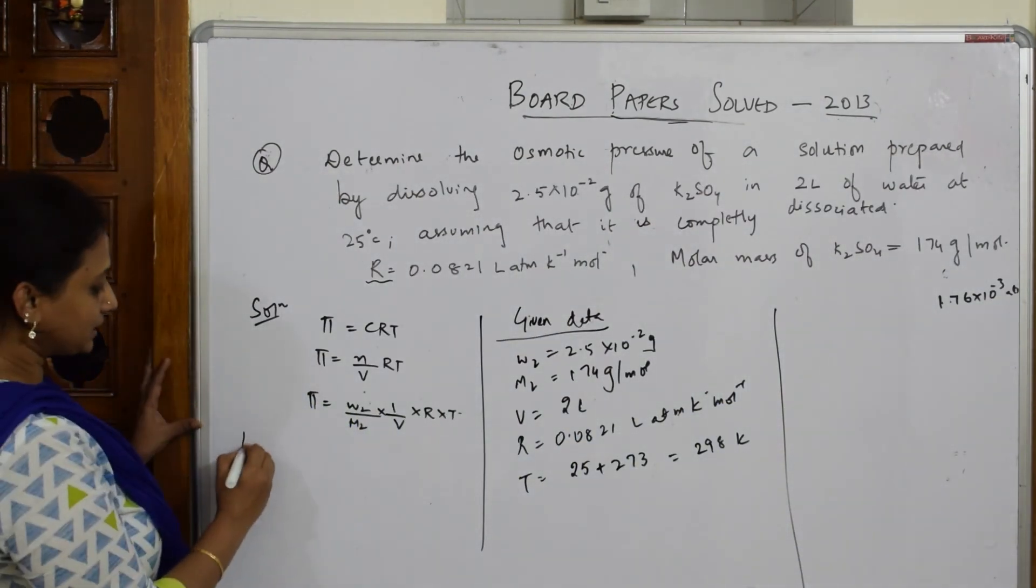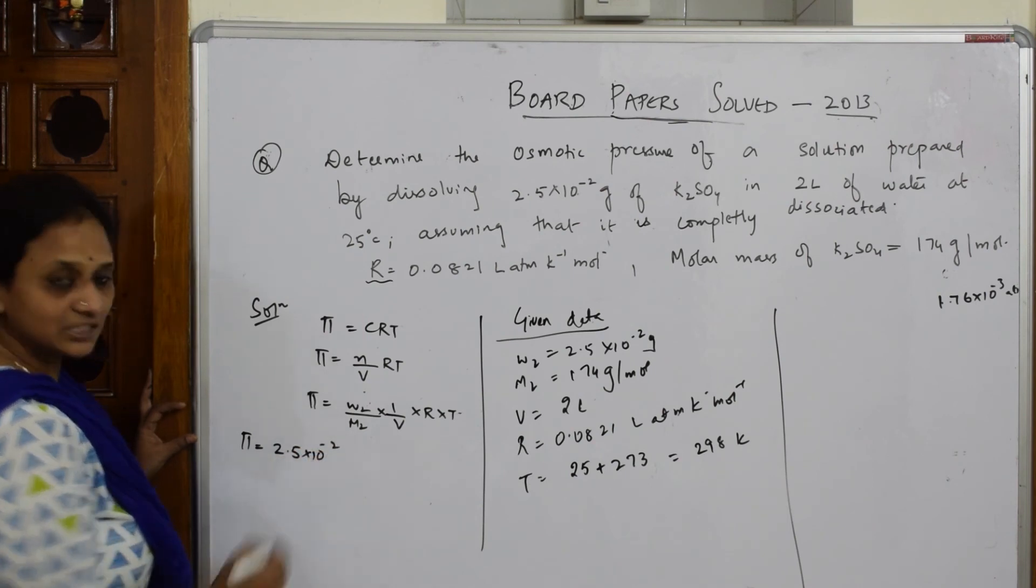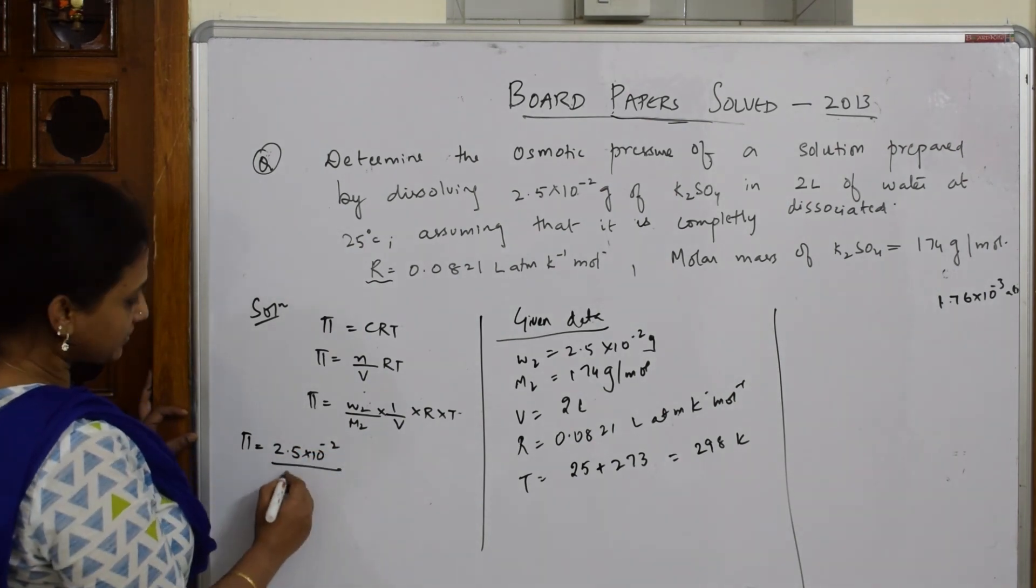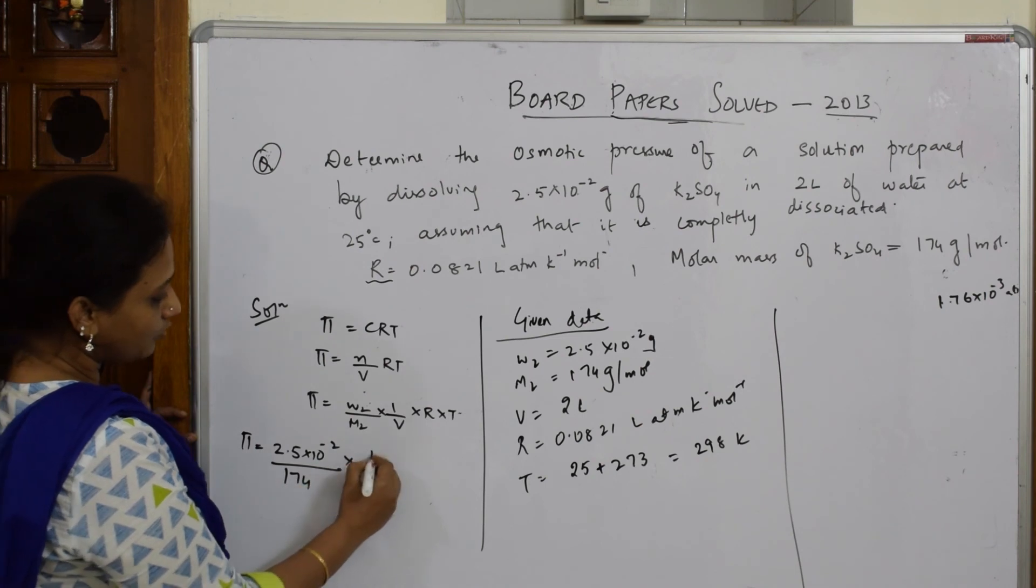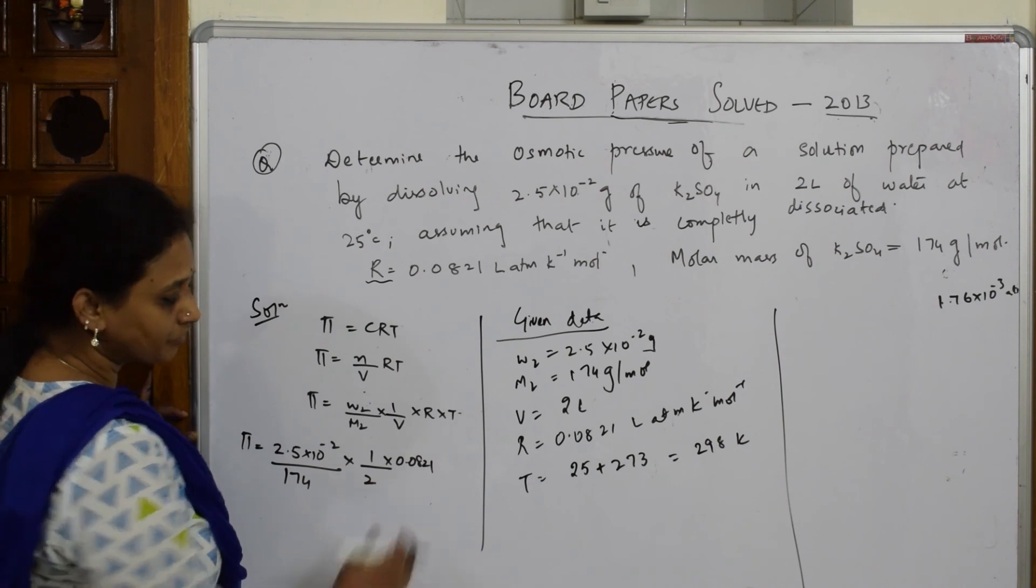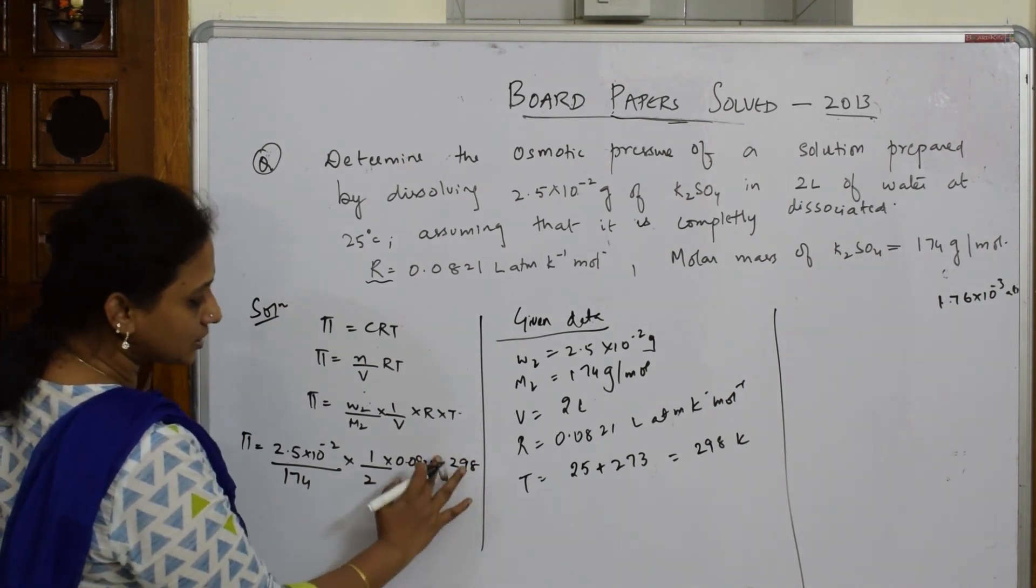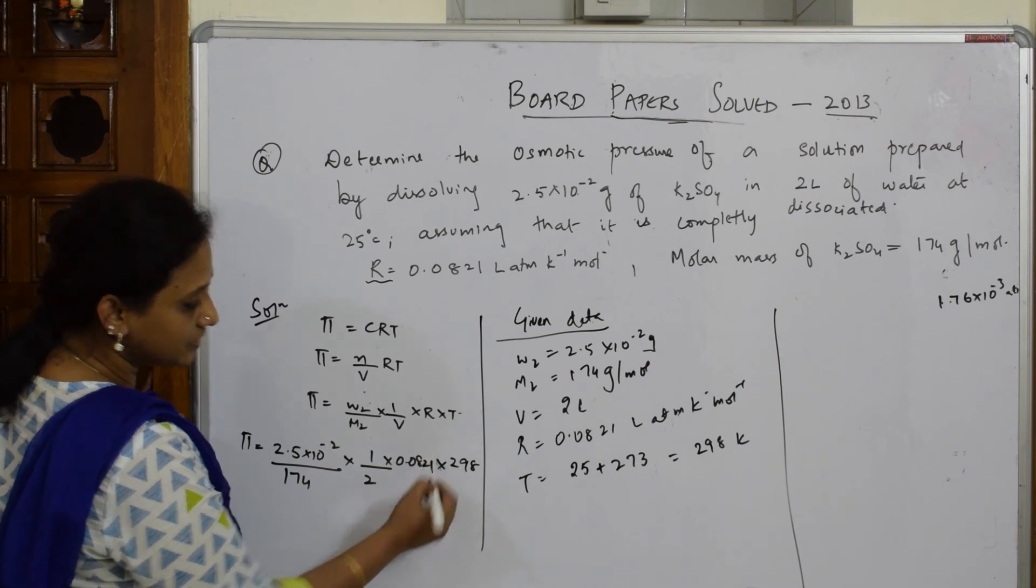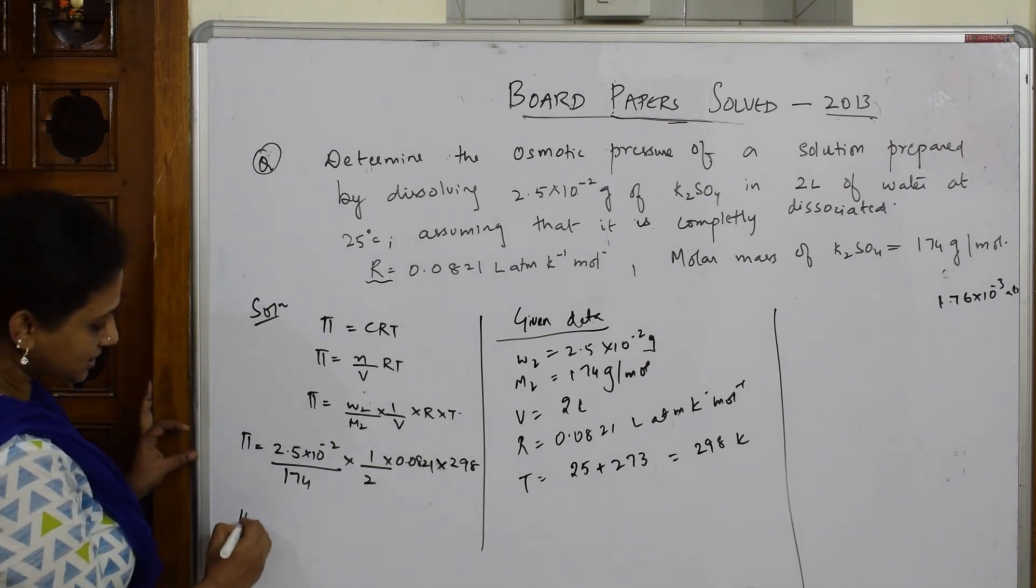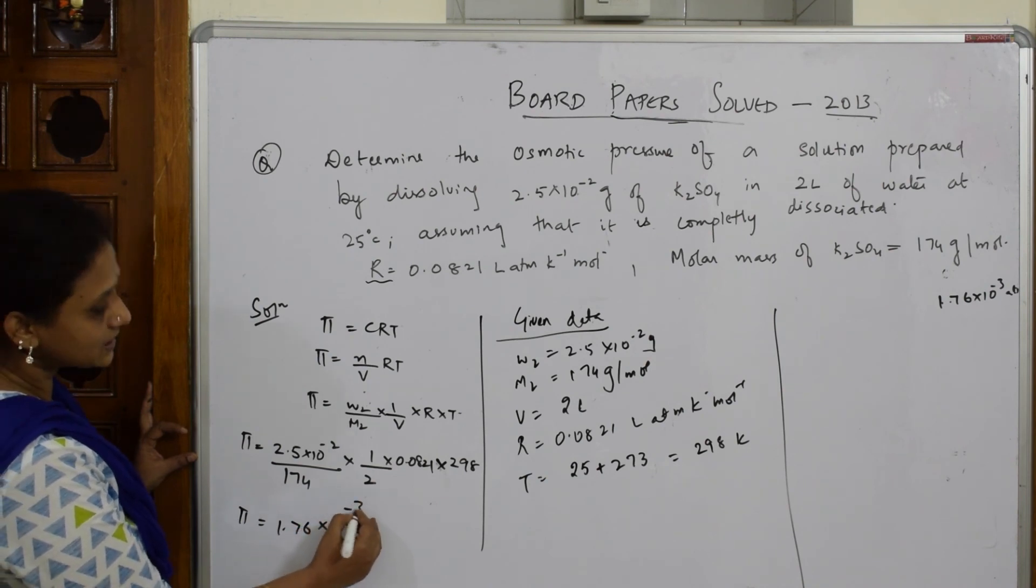Now substitute in that formula directly. Come back and substitute: π = W2 is 2.5 × 10^-2, molar mass given is 174, volume given is 2, gas constant given is 0.0821, temperature is 298 Kelvin. Please don't forget to add 273. When you solve this, you get an answer of 1.76 × 10^-3, unit for osmotic pressure is atmosphere.